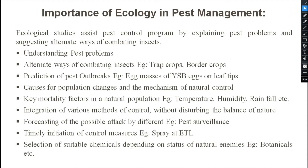Instead of using high doses of insecticide, we can understand what other techniques can be implemented to manage the pest without disturbing the balance of nature, because we have to go for sustainable management and sustainable agriculture. Suppose this year we have completely studied the ecology of a particular insect — when it is coming, when it is dying, when the population is more or less — then in the future, in the next year, we can go for forecasting and future prediction.